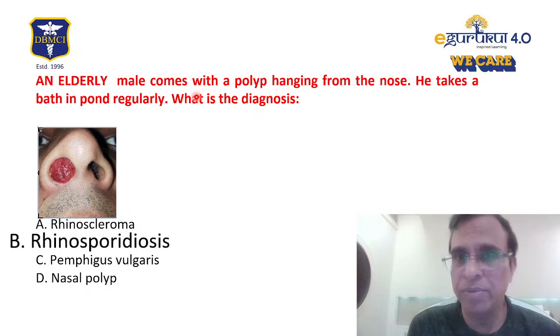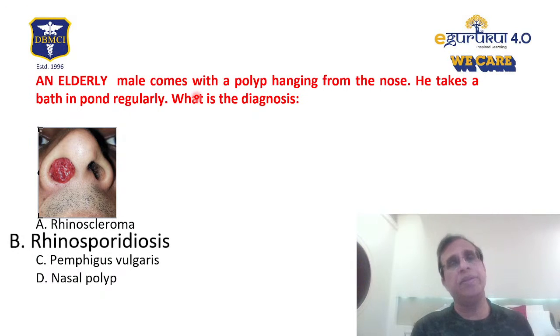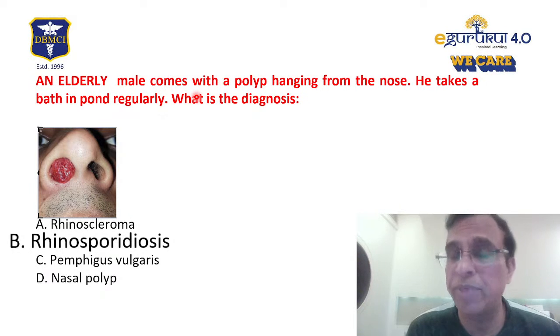It's a pathogen that mainly grows in collected waters like ponds or sea coast. People who take bath in ponds regularly, in lakes, people who go to sea areas like fishermen, or even farmers in farmlands where there is collected water, these people tend to have this problem more commonly. Because water collects, ponds are more in southern India, that's why rhinosporidiosis in India is seen in the southern part of the country.